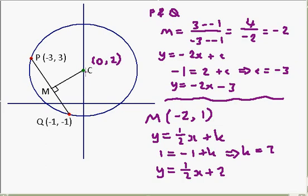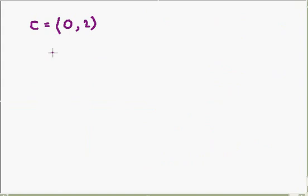So, I'm going to look at the distance between C and Q. So, I'll just write down the coordinates of Q, minus 1, minus 1. So, it's the difference in the X's, we'll do that one first. Minus 1, take away 0, which we square,